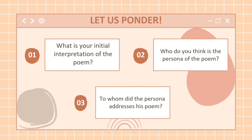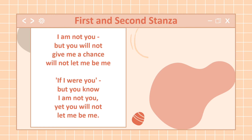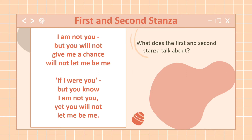To understand the poem deeply, let's proceed to the analysis by stanza. For the first and second stanza — 'I am not you, but you will not give me a chance, will not let me be me. If I were you, but you know I am not you, yet you will not let me be me' — the persona is pleading with the invaders or oppressors to give him the chance to let him be himself. The line 'let me be me,' which keeps repeating, shows a strong desire to be free.